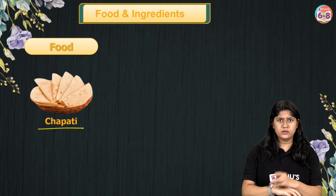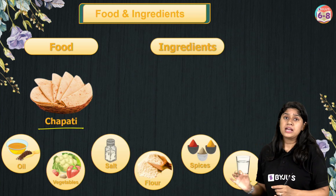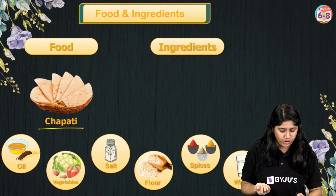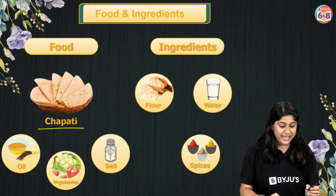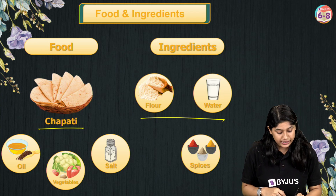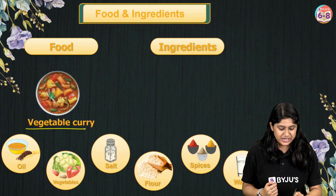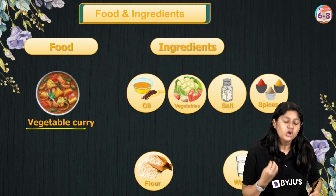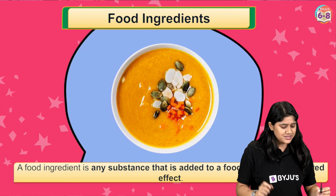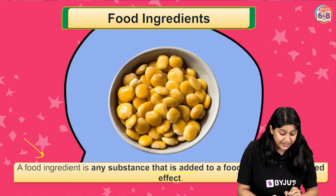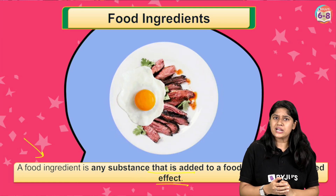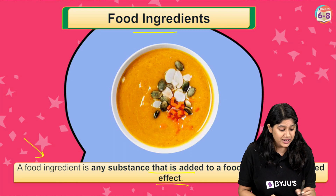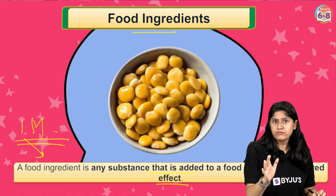Here we have chapati, which is a food, and here we have the list of some ingredients. What are the ingredients we need to make chapati? We need flour and we need water — when we add these two together we get chapati. In the case of a vegetable curry we need vegetables, oil, spices, and salt. To define ingredients: a food ingredient is a substance that is added to the food to achieve the desired effect. This is a very important one-mark definition.